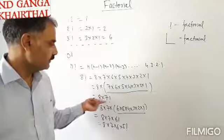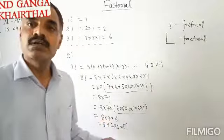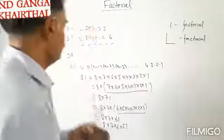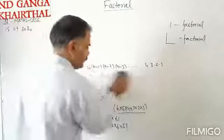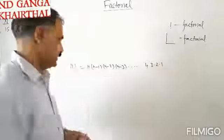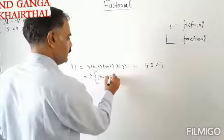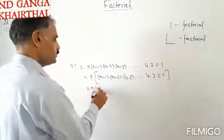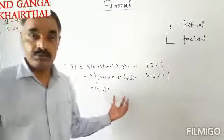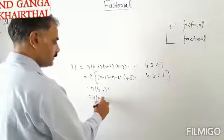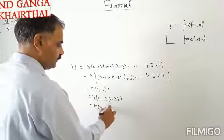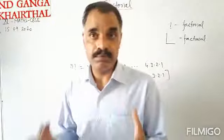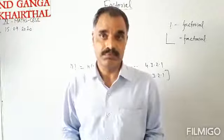So factorial n can be expanded in 1 term, 2 terms, 3 terms, up to n terms. Factorial n can be written as n into n minus 1 factorial, up to 2 terms; or n into n minus 1 into n minus 2 factorial, up to 3 terms; or n into n minus 1 into n minus 2 into n minus 3 factorial, up to 4 terms. So factorial can be expanded however many terms we want.